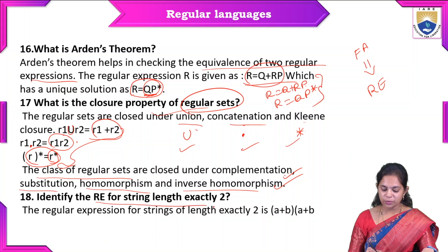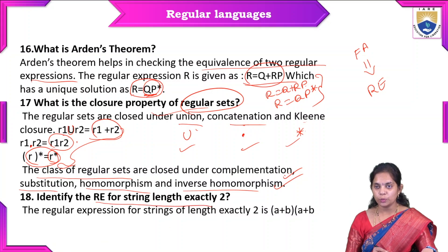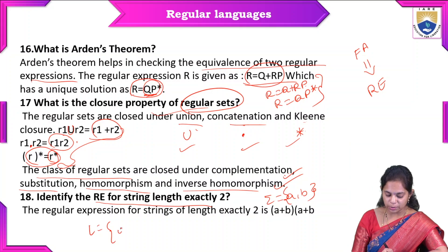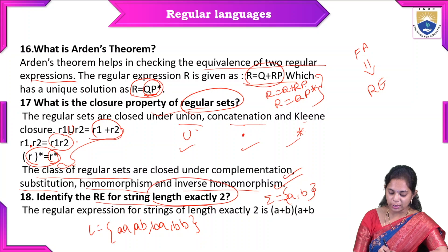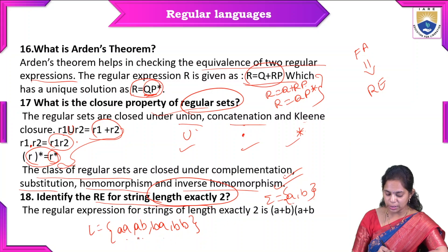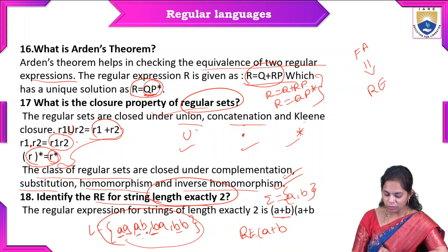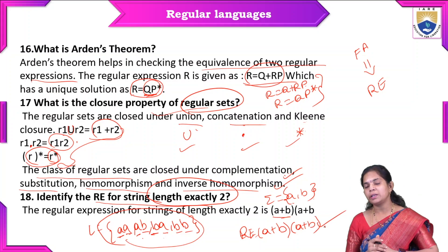Example: identify the regular expression for strings of length exactly two, where sigma = {a, b}. The possibilities are: aa, ab, ba, bb. We write this as (a+b)(a+b), since each position can be either a or b.